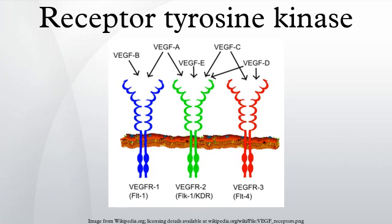Approximately 20 different RTK classes have been identified. Regarding structure, most RTKs are single subunit receptors, but some exist as multimeric complexes. For example, the insulin receptor forms disulfide-linked dimers in the presence of hormone. Moreover, ligand binding to the extracellular domain induces formation of receptor dimers.